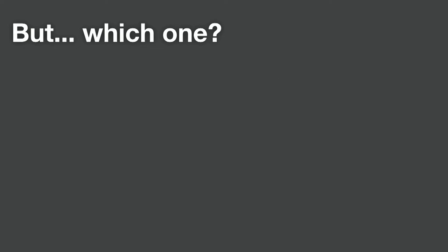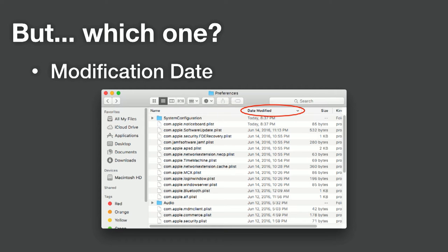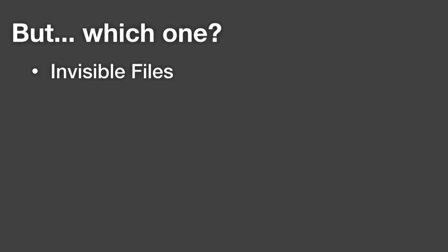We have a few methods for understanding where preferences live and how to zero in modularly. Remember — minimal management, surgical, precise. We're going to find that one preference we actually want to affect. One trick is the modification date: if you go into your OS or user settings and make a change — say you move the dock to the right — you can go into Finder, go to library preferences, sort by modified, and see the most recently modified file. Date modified is super helpful for isolating the thing you just changed. It's tricky though because there are invisible files, even in preferences.